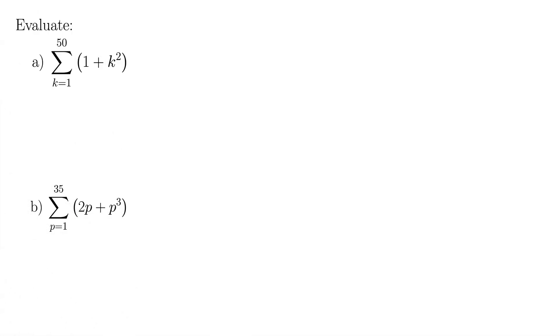For the first one, we have the sum, as k goes from 1 to 50, of the quantity 1 plus k squared. So the first step, we know that we can break this up, because we have a plus in here.